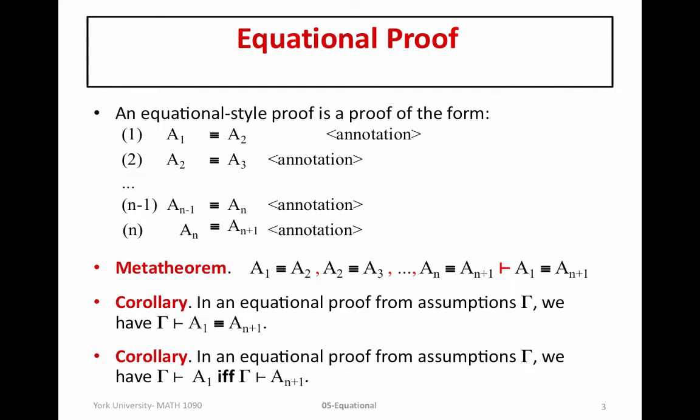And then finally, an additional corollary that follows from this, which is also a metatheorem, is that in an equational style proof from assumptions gamma, we have that gamma proves a1 if and only if gamma proves an plus 1. So here, this is where we have this outside connection between equivalences and the biconditional operator, the if and only if operator. Formally, we don't have the if and only if within our logic, and they're not equivalent statements. They don't have the same exact meaning, but they do have the same truth values.